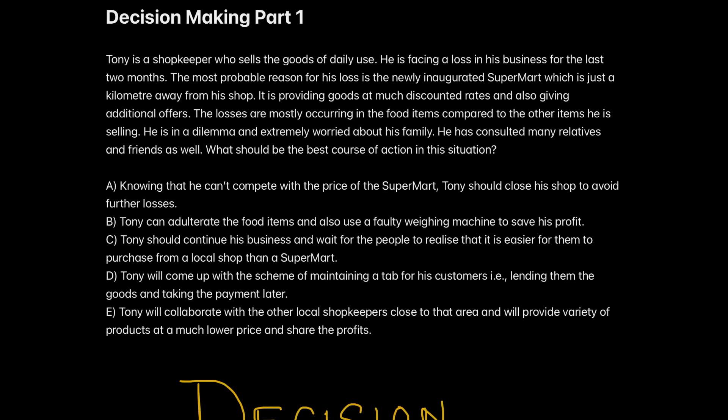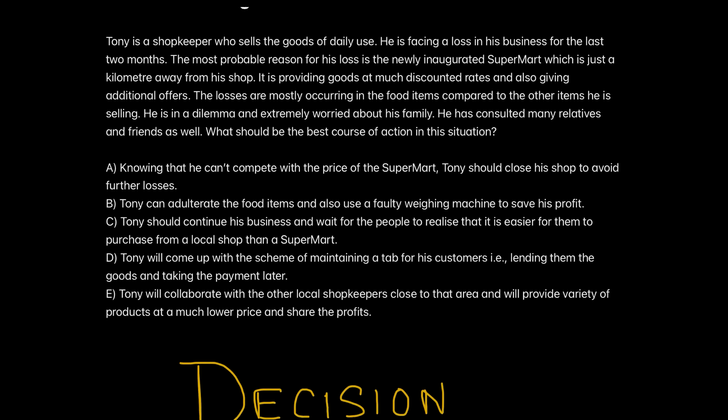Option C says Tony should continue his business and wait for people to realize it is easier for them to purchase from a local shop than a supermarket. This is a stagnant decision — whatever is happening, let it happen at its own pace. This is not the best decision unless you truly can't do anything about the problem. Here, Tony can do something, so staying still and depending on others for your own profit is not the best decision. It is good but not best.